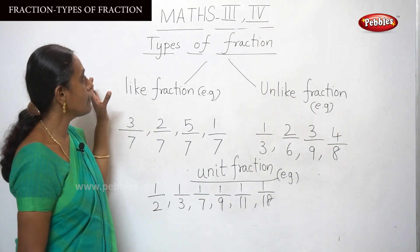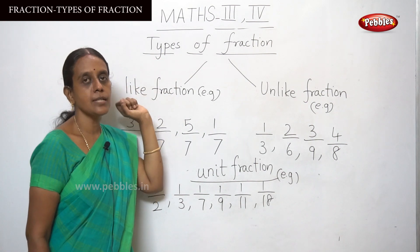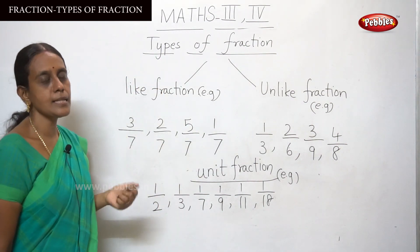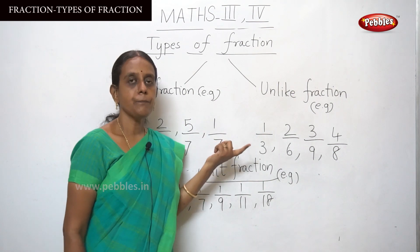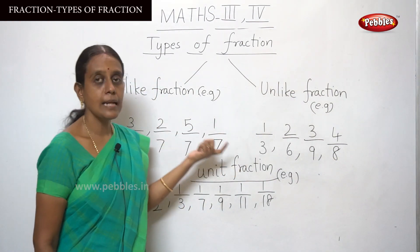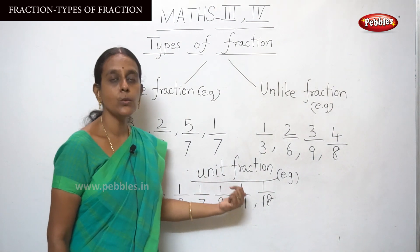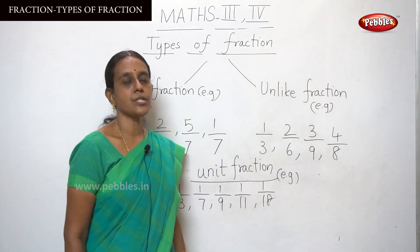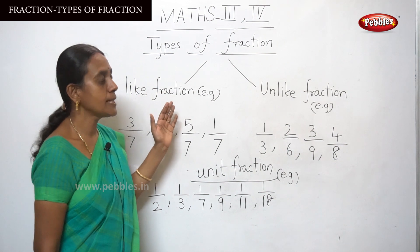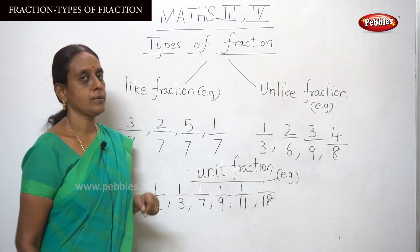Thus we have discussed the types of fractions. There are 5 kinds: proper fraction, improper fraction, like fraction, unlike fraction, and unit fraction. Now let us move on to fractions in ascending order and descending order.